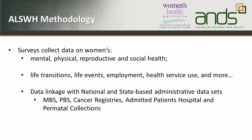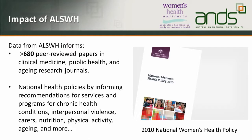We also collect data on life transitions — different ages of women going through different life events — things related to health employment and health service use. I'll also briefly mention data linkage: we have actually linked our survey data with some administrative data sets, specifically the MBS, PBS, Cancer Registries, and Admitted Patient Hospital data. The linkage is particularly sensitive and we treat it quite differently in how we make it accessible. The data is used extensively, with more than 680 peer-reviewed papers published using our data, and national health policies have been informed by our reports.